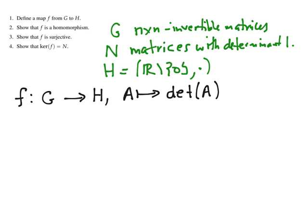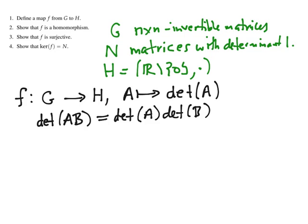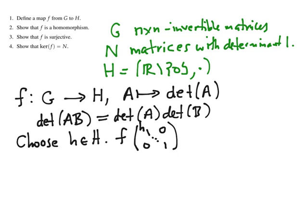The second step is to show we have a homomorphism. This follows immediately from the property that the determinant of a product of matrices is the product of the determinants, so F is a homomorphism. Next, we need to show that F is surjective. We choose some non-zero real number H in H and need to find a matrix whose determinant equals H. We take the matrix with H in the upper-left corner, 1s everywhere else on the diagonal, and 0s in the off-diagonal positions. The determinant of this diagonal matrix is just the product of the diagonals, which gives H. So F is a surjective map.